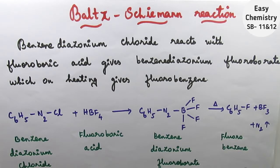In this benzene diazonium chloride reacts with the fluoroboric acid gives benzene diazonium fluoroborate on heating which gives fluorobenzene. Now let's see the reaction.